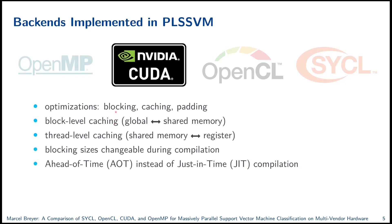For the CUDA backend, we used several optimization techniques: blocking, caching, and padding. For example, padding reduces branch divergence by removing boundary check conditionals, and blocking and caching exploit memory hierarchies in modern GPUs — block-level caching between global and shared memory, and thread-level caching between shared memory and registers. All blocking sizes are changeable at compilation time to fine-tune our implementation for specific hardware. We also ensured that our CUDA code is ahead-of-time compiled rather than just-in-time compiled during execution.